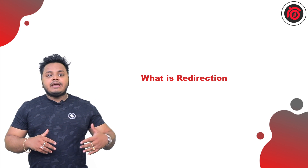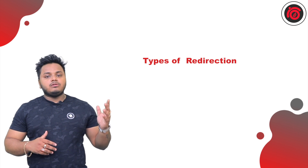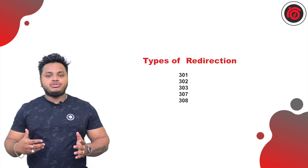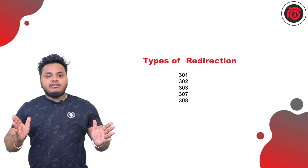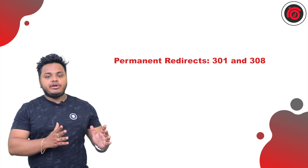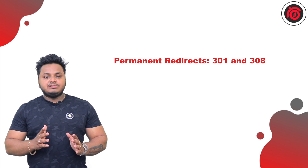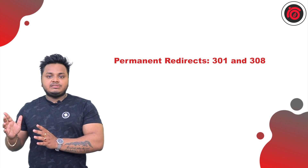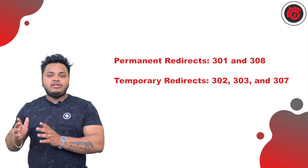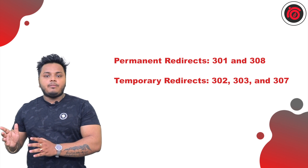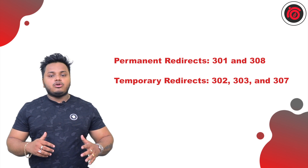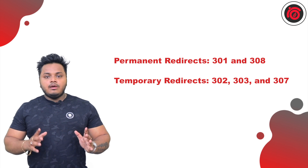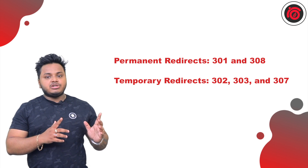There are various types of redirection: 301, 302, 303, 307, and 308. We will dissect them into two categories. The first category is permanent redirection, where only 301 and 308 apply. The other category is temporary redirection, where 302, 303, and 307 operate. In the field of SEO, redirections are also known as 3XX because every response code starts with a 3.